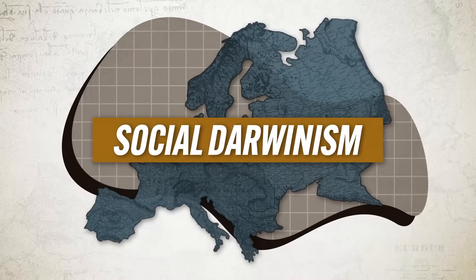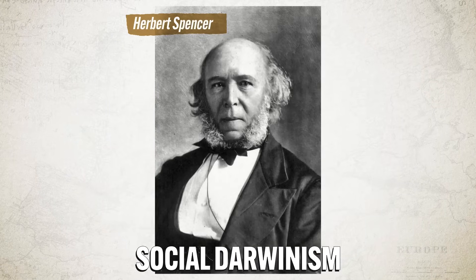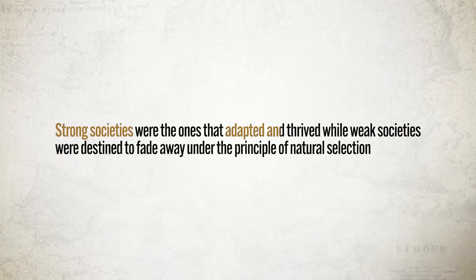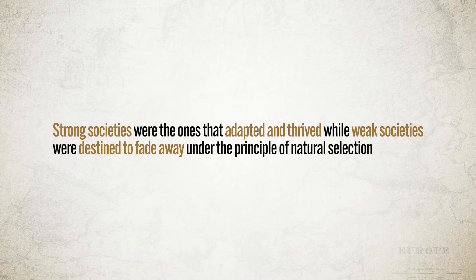But it was the application of Darwin's theory to social structures where things started getting a little kooky. So in the second half of the 19th century, some people began applying the principles of organic evolution to the social order, which came to be known as Social Darwinism. And the name to recognize here is Herbert Spencer. He was a British philosopher who argued that just as organisms evolved over time and just as strong organisms adapted and survived while weaker organisms died out, so civilizations were like organisms too. Strong societies were the ones that adapted and thrived, while weak societies were destined to fade under the principle of natural selection — only the fittest survived.